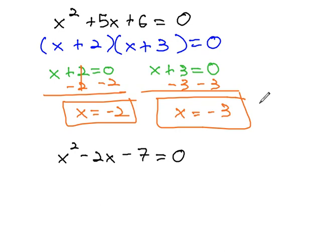However, this method is very limited, because it requires us to be able to factor the expression x squared plus 5x plus 6. What if we had an equation such as x squared minus 2x minus 7?